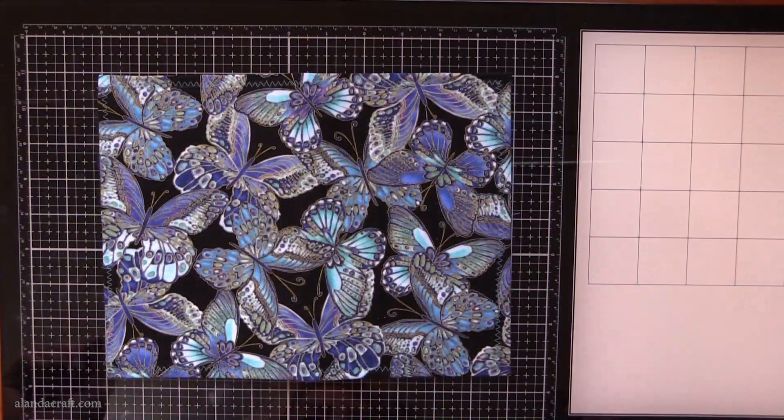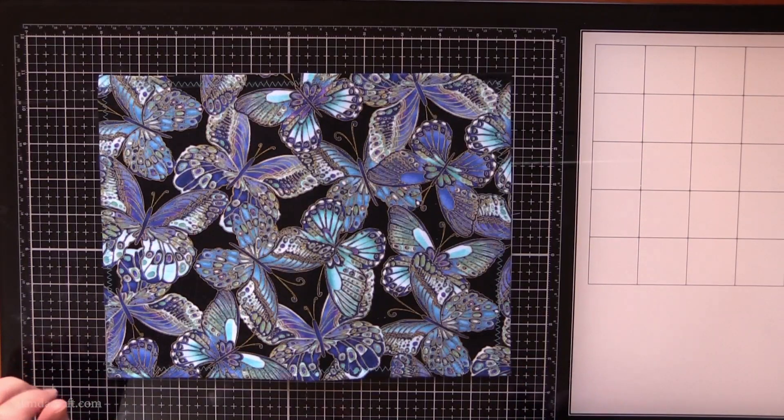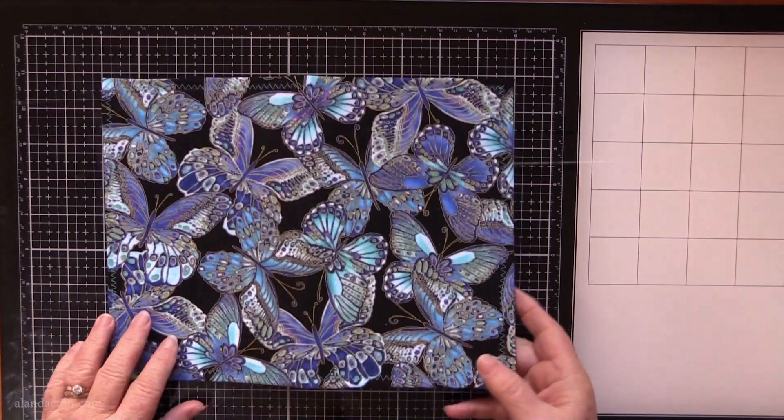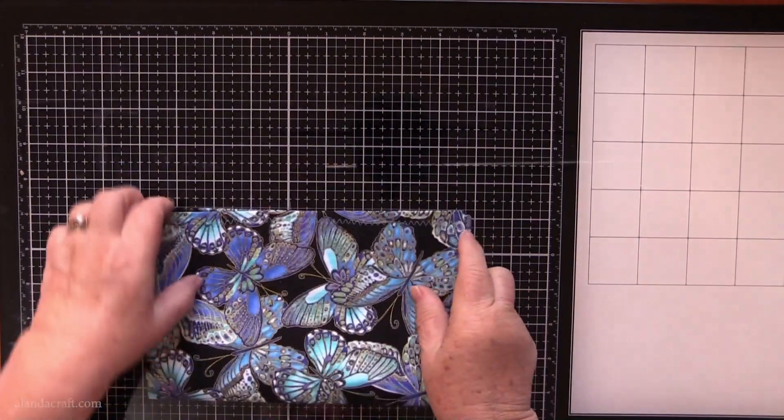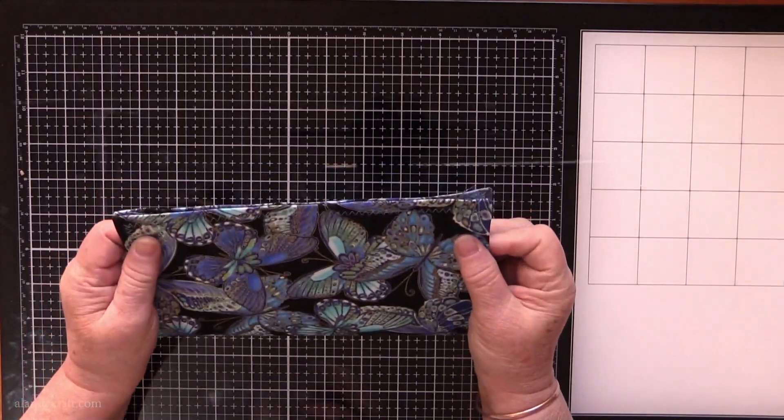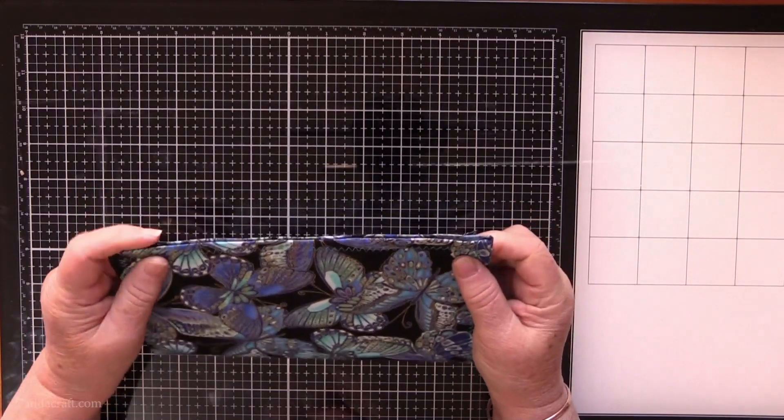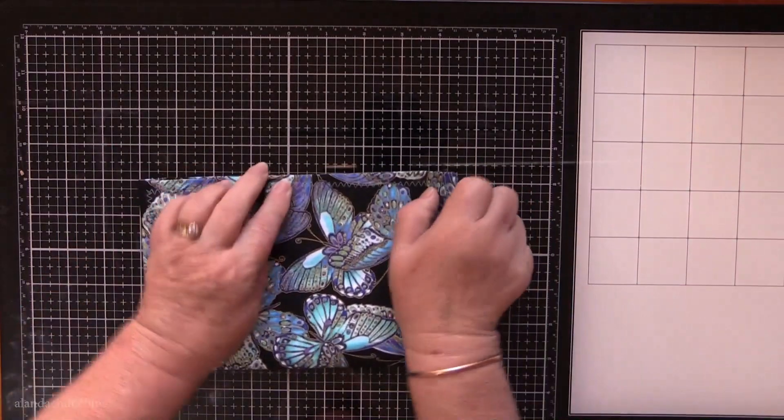So now that we've sewn around the edge, it's time to add some pages. What I'm going to do is just bring the edges together of the journal, match them up nice and straight as you can.